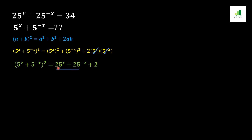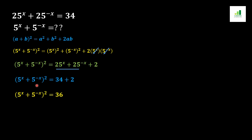As we know from the given equation, 25 to the power x plus 25 to the power minus x is equal to 34. So we replace this expression with 34, and on the right side of the equation we get 34 plus 2. This 34 plus 2 sums up together and we get 36 on the right side, while the left side of the equation remains the same.